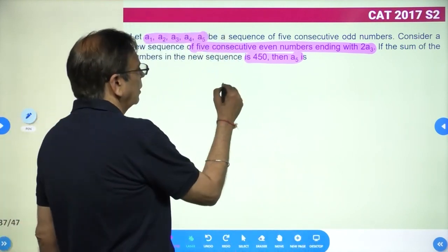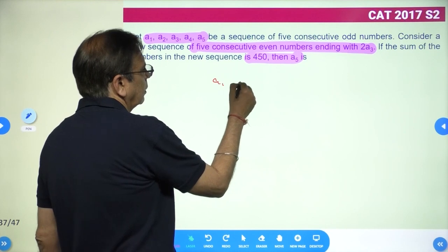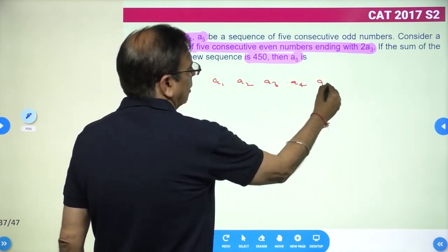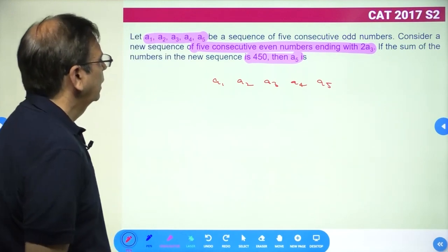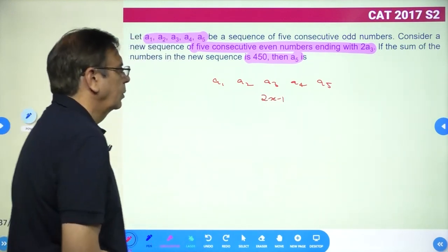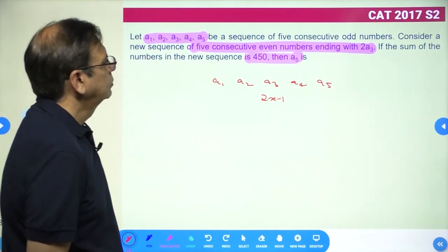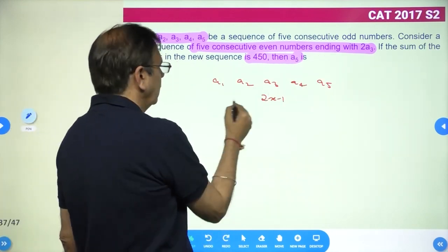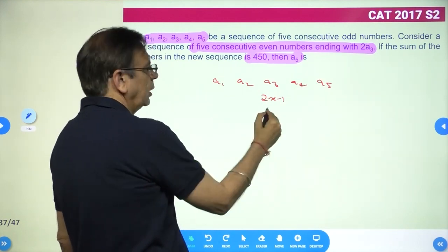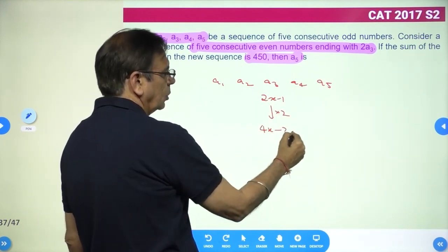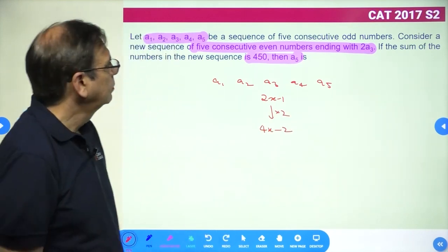We are starting with a3. Let me say a3 is 2x minus 1. Consider this new sequence starting with twice of a3. What will be twice of a3? Twice of a3 will be 4x minus 2, which will obviously be an even number.